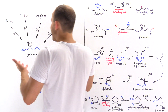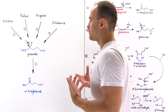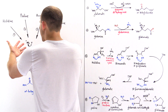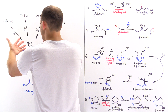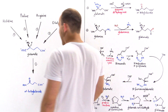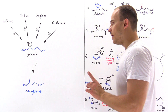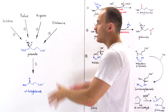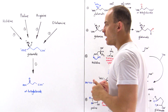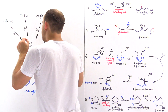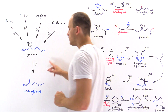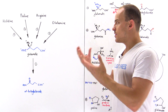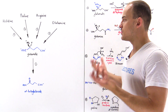So the strategy here is as follows. If we begin with glutamate, glutamate can simply be metabolized directly into alpha-ketoglutarate. But if we have either one of the other 4 amino acids, they must first be metabolized into glutamate, and then glutamate is in turn metabolized into alpha-ketoglutarate. This is the strategy that our cells employ.